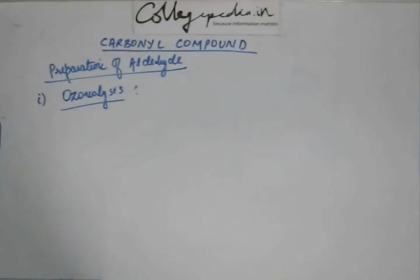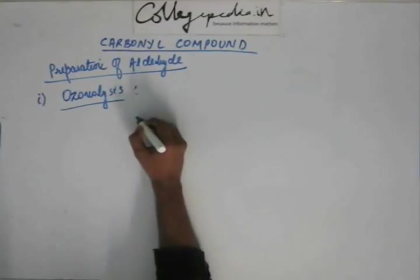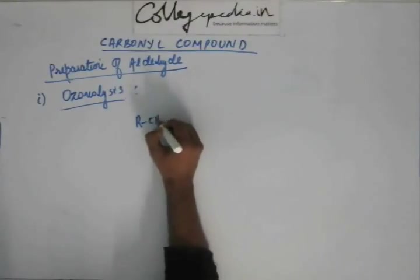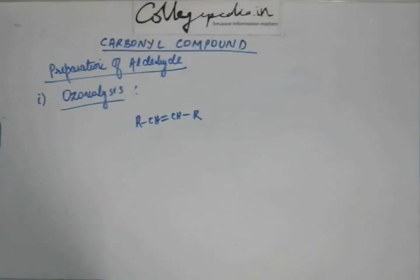Previously in the chapter on hydrocarbons, we studied ozonolysis as a reaction of alkene. Now it will be a method of preparation of aldehyde. If you haven't studied ozonolysis, go back and study it before continuing. If you have a vague idea, continue listening as I'll quickly recapitulate, but I won't go into the depth of the mechanism since it has been taught separately in great detail — so there is no need for repetition.